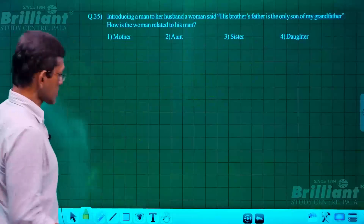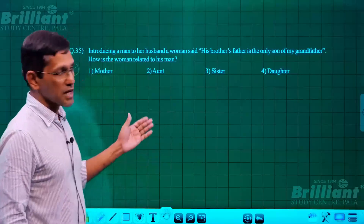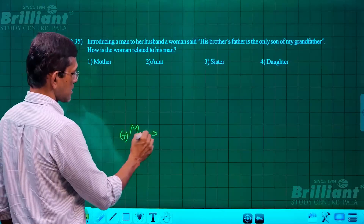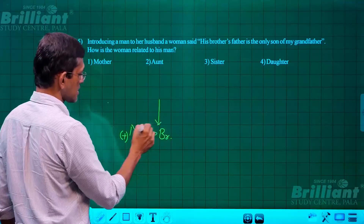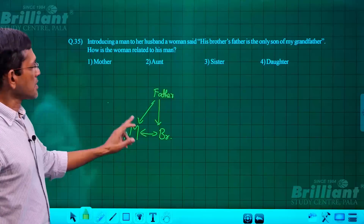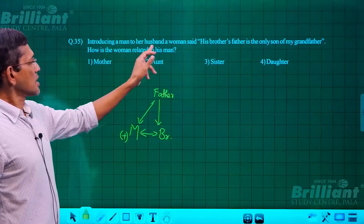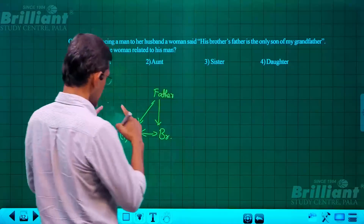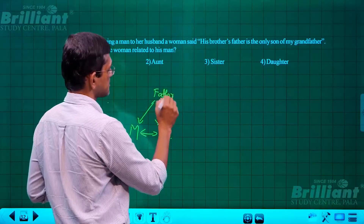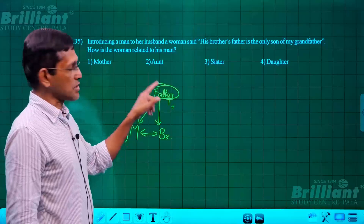Question 35: introducing a man to her husband, a woman said, 'His brother's father is the only son of my grandfather.' The man's brother's father is also the man's father. Call this person T. T is the only son of the woman's grandfather. The woman's grandfather's only son is her own father — so T is her father.